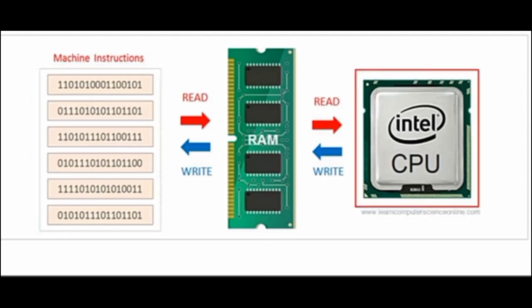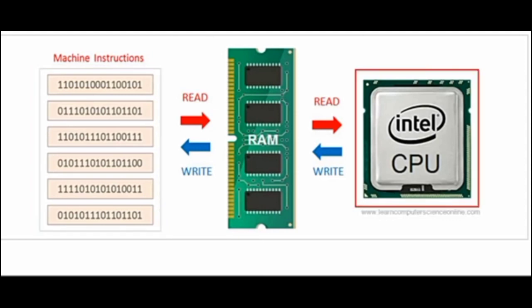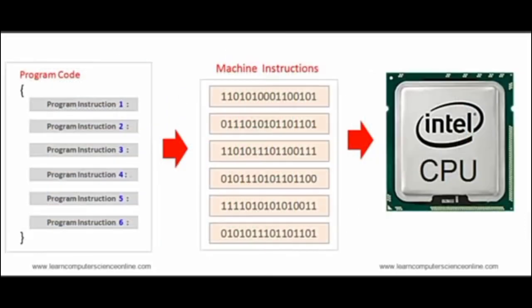These machine instructions in binary can be decoded and directly executed by the microprocessor to perform various operations as the program instructions. In other words, the software is an essential component of every computer system. Software is also categorized into two types, which are the system software and application software.